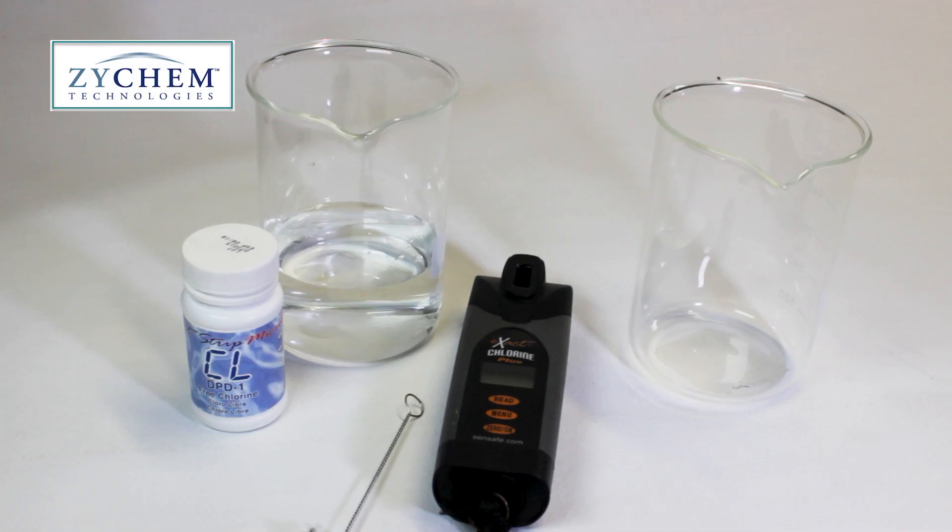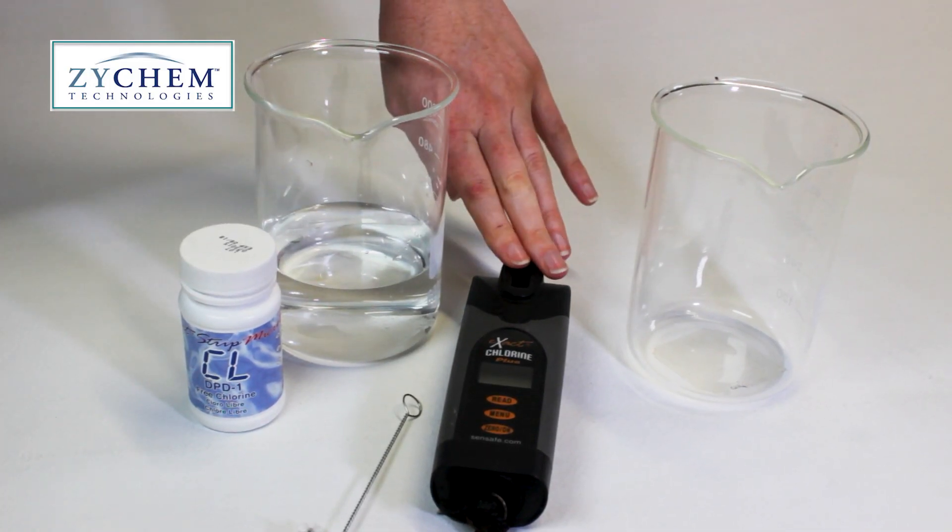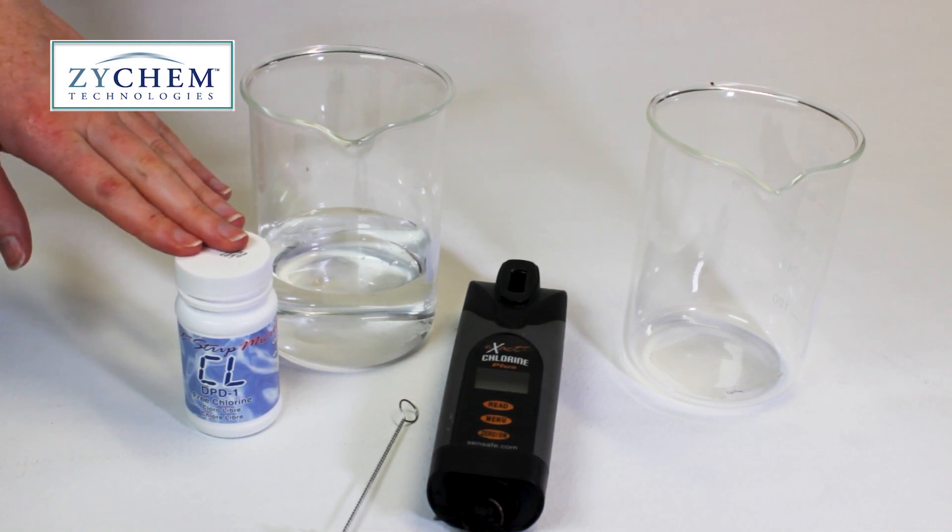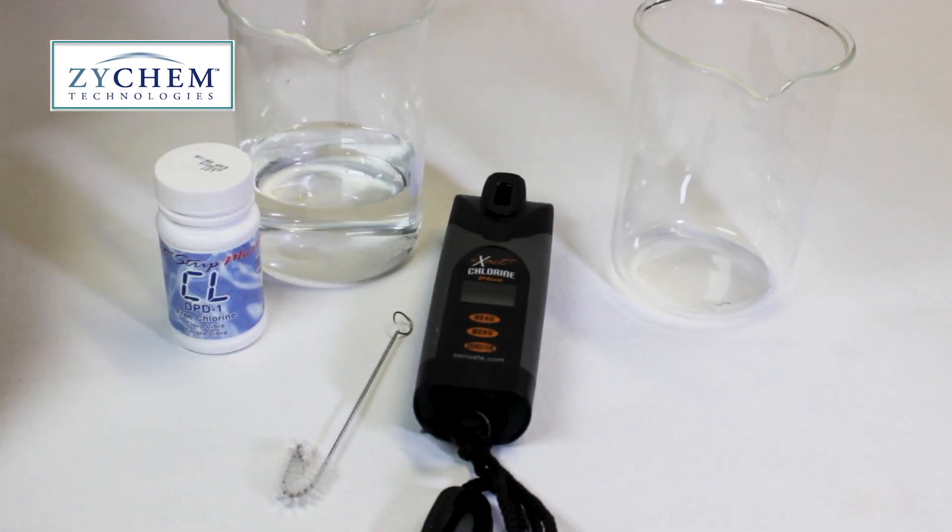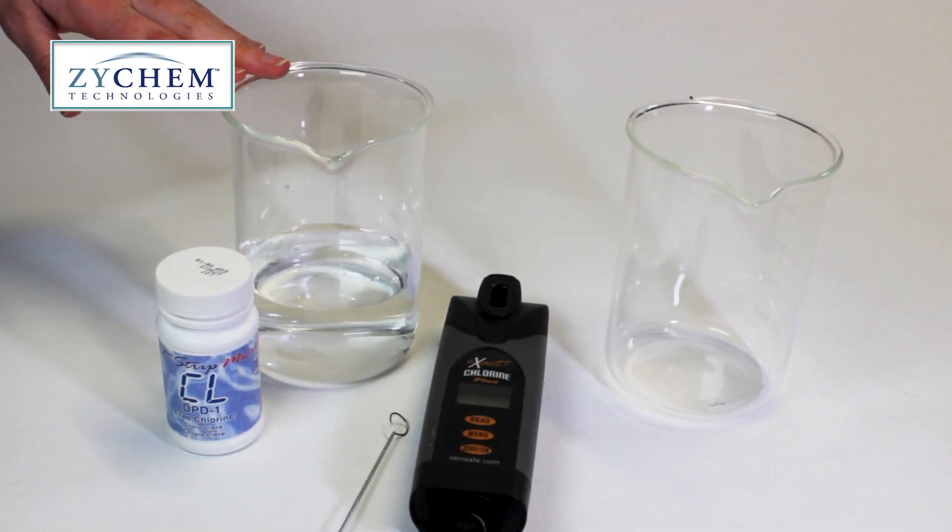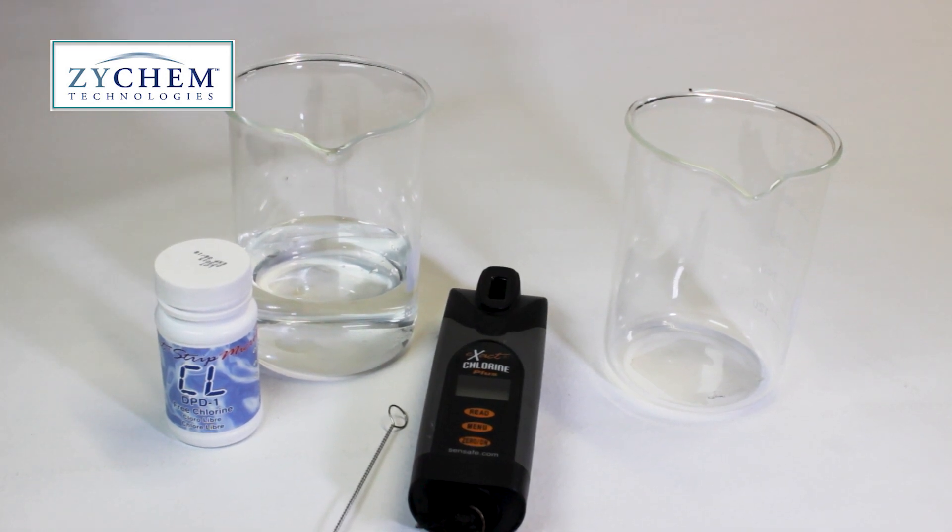For the test you'll need the photometer, the DPD-1 strips which come in the kit, the cleaning brush also from the kit, and the water sample you're looking to test.